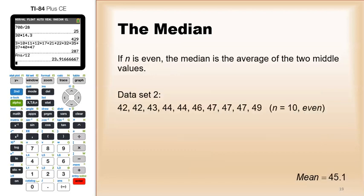If you have an even number of data points, then you're actually going to have two numbers that are in the middle. In this case here, I have 10 numbers - 44 and 46 are both in the middle, because at that point there are four numbers below them and four numbers above them.